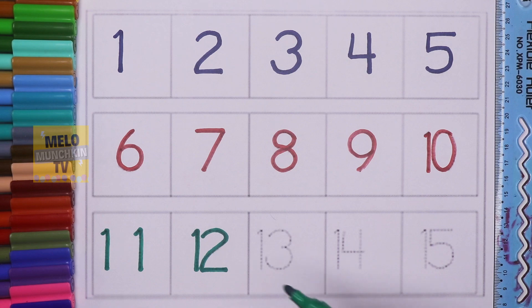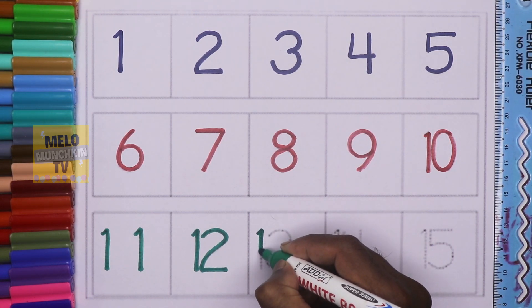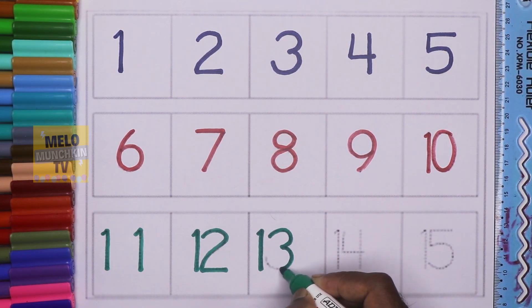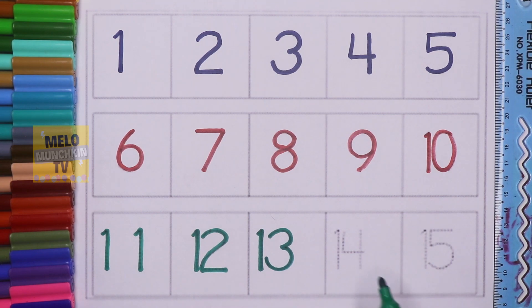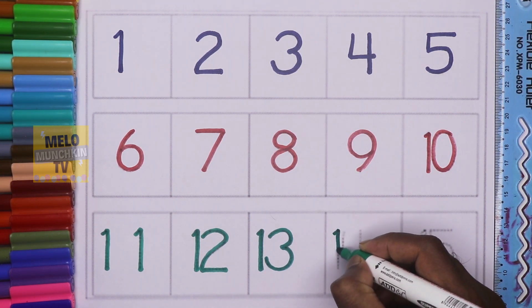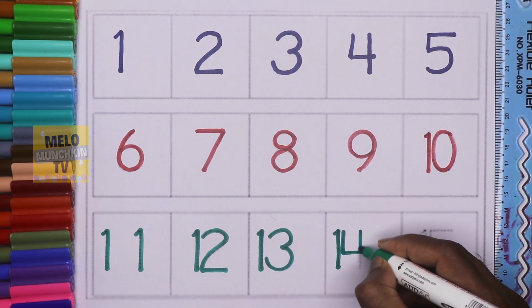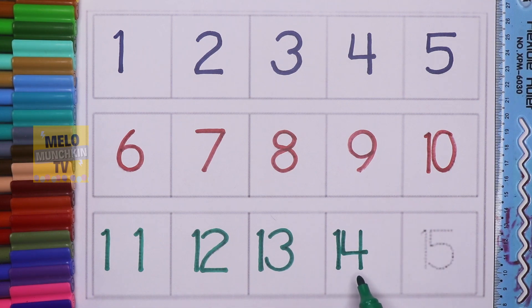This is 13, 1-3, T-H-I-R-T double E-N, 13. This is 14, 1-4, 14, F-O-U-R-T double E-N, 14, F-O-U-R-T double E-N, 14.